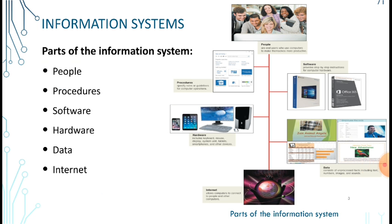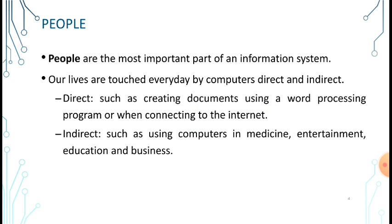This information system consists of several parts: people, procedures, software, hardware, data, and the internet. Let's talk about them. First of all, people, which are the most important part of the information system, because people are the users or end users of the information system.